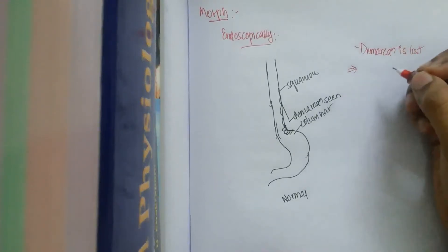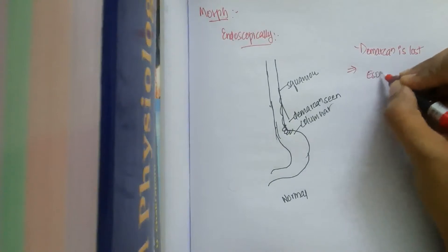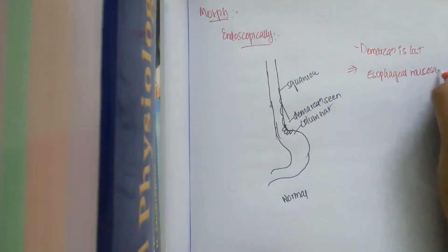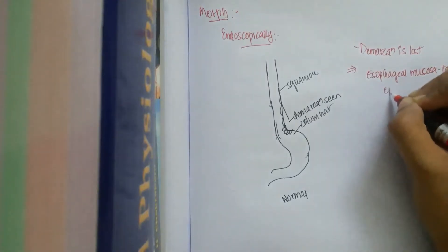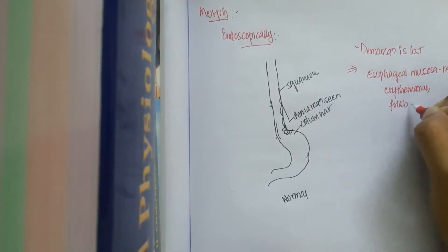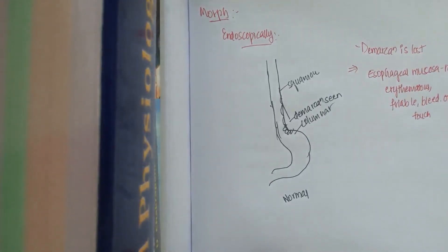Then, the distal esophageal mucosa, how does it look? It becomes red, erythematous, friable, and whenever you touch it, it may bleed on touch.